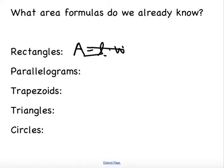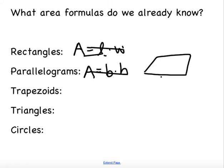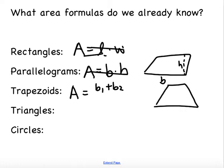For parallelograms — that's just a rectangle that has been shifted a little bit — the area is base times height, where that height is perpendicular. For trapezoids, the area is base 1 plus base 2, divided by 2, multiplied by the perpendicular height.